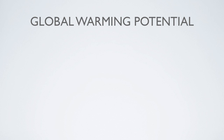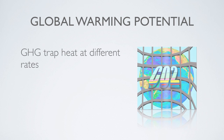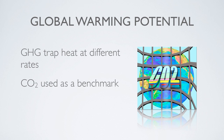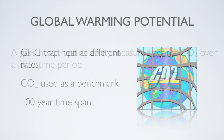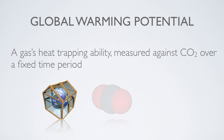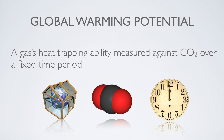Global warming potentials. Different greenhouse gases trap heat in the atmosphere at different rates, and they also have different atmospheric lifetimes. This raises the question: how do we make meaningful comparisons between gases? In order to get around this problem, scientists use carbon dioxide as a benchmark for measuring the heat-trapping ability of each of the other greenhouse gases. Furthermore, to resolve the issue of different atmospheric lifetimes, a time span of 100 years is typically used in evaluating a gas's heat-trapping effect. A gas's heat-trapping ability, measured against carbon dioxide over a fixed time period, is known as its global warming potential.